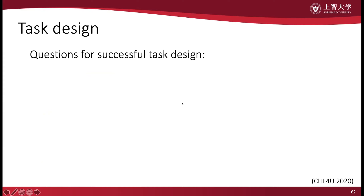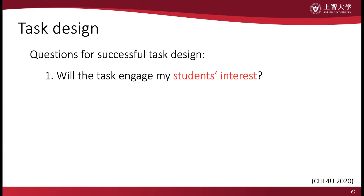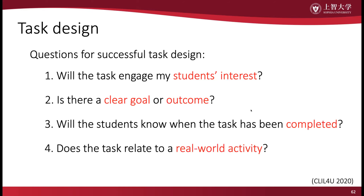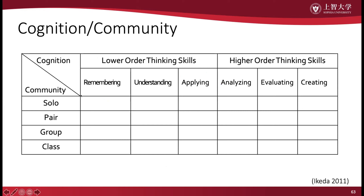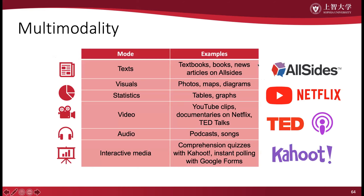There are a few questions we should be asking ourselves when we design tasks for our students. Will the task engage my students' interests? Is there a clear goal or outcome? Will the students know when the task has been completed? And does the task relate to a real-world activity? We should also take note of aspects of community and cooperative learning — a variety of solo, pair, group, and whole-class tasks will help build community in the classroom. Additionally, we should strive to use multimodal input, including different types of texts, visuals, statistics, and so on. This multimodality will add variety to students' inputs, and some students may learn better with certain types of input over others.